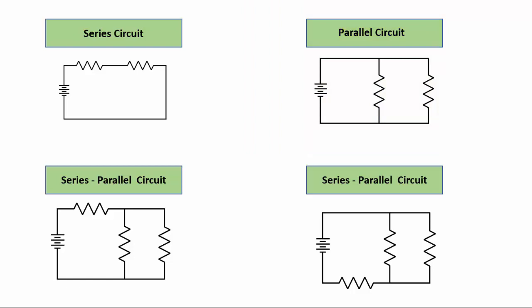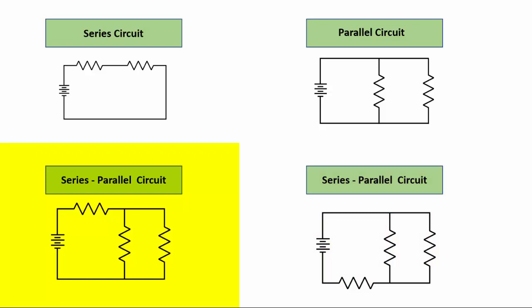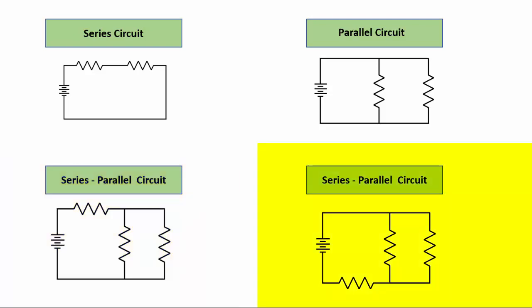The third type of circuit is a combination of the two. On the bottom here I have two different ones drawn slightly different. In the first example it's a series-parallel circuit where the series resistor is first and then the parallel part of the circuit comes next. In the bottom right I have the parallel part first and then there's a resistor in series with that parallel part. Regardless of whether the series part is first or the parallel part is first, this arrangement is called a series-parallel circuit.